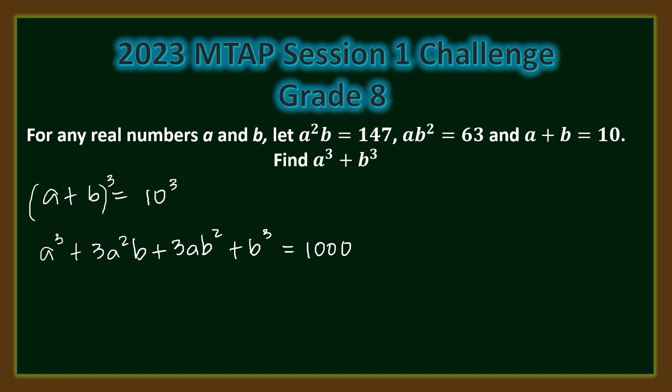Isolating a cubed plus b cubed on the left-hand side using the addition property of equality, we have 1000 minus 3a squared b minus 3ab squared.